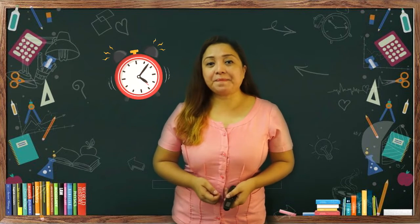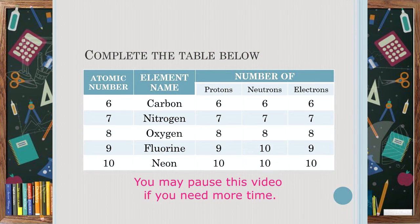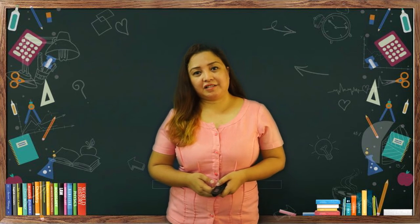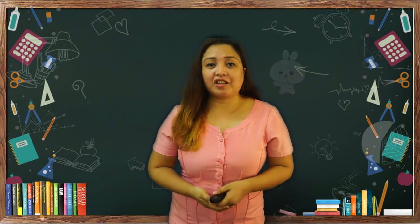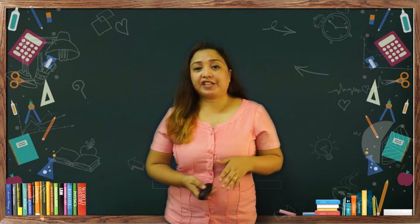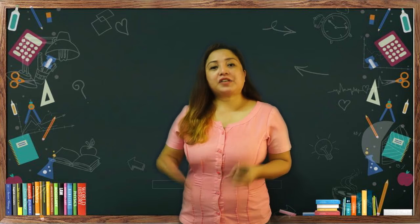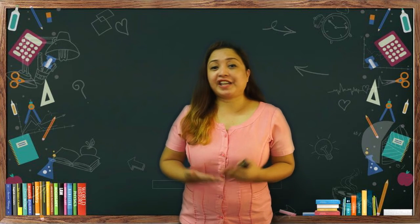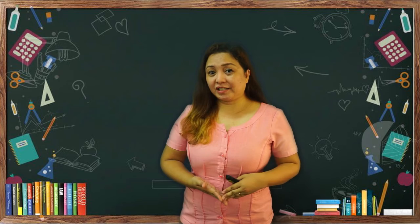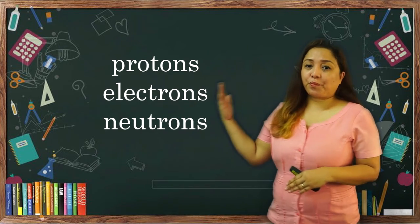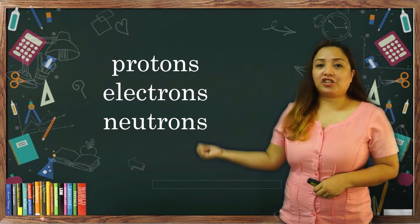Time's up. Let us check your answers. Did you get it correctly? Very good! If not, don't worry — you can just review this video and try it again. So based on our activity, can you now tell me what are the subatomic particles? We have protons, electrons, and neutrons.